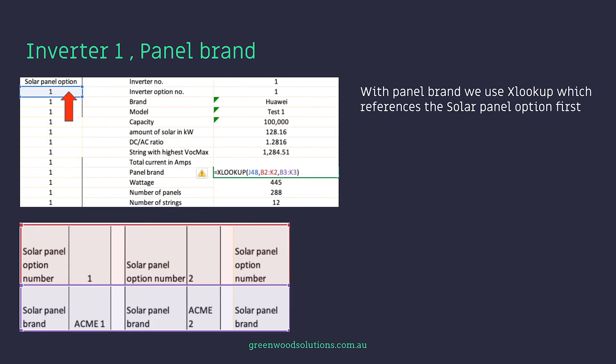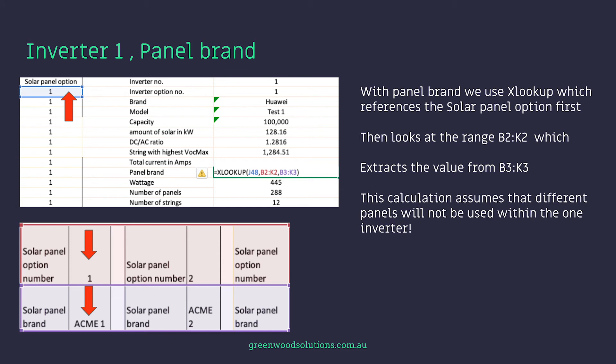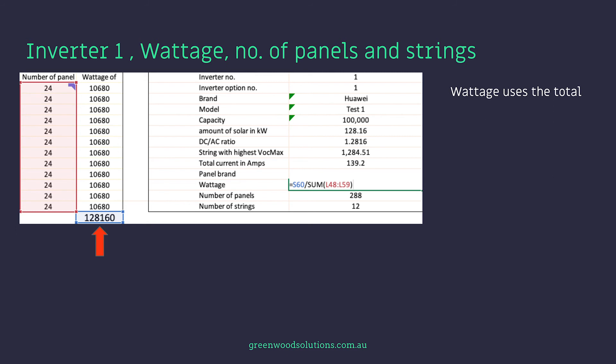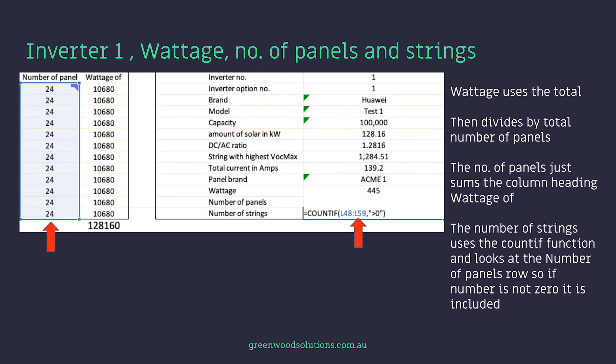With Panel Brand, we use XLOOKUP which references the solar panel option first, then looks at the range B2 to K2 and extracts the value from B3 to K3. This calculation assumes that different panels will not be used within the one inverter — and that makes sense, that would be horrible for the designer. Wattage uses the total then divides by the total number of panels. The number of panels just sums the column heading 'wattage of,' and the number of strings uses the COUNTA function looking at the number of panel rows — if the number is not zero, it is included.